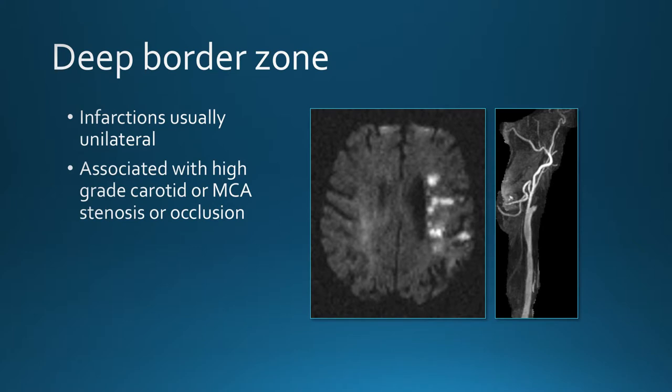The deep border zone infarcts are usually unilateral and associated with high-grade stenosis or occlusion of the internal carotid or middle cerebral arteries. They often form a string-of-beads appearance in the centrum semiovale and corona radiata.